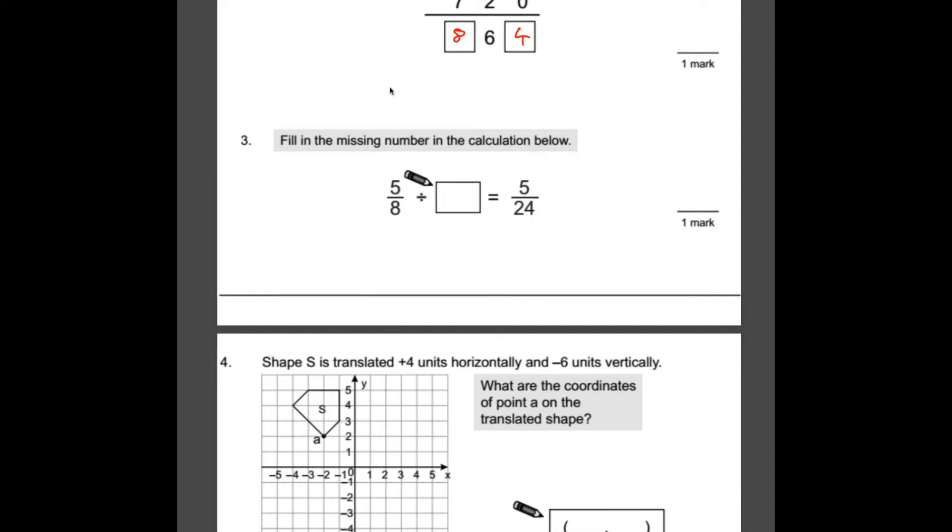Number three, fill in the missing number in the calculation below. If you have good knowledge of dividing fractions, you should be able to spot a pattern here. There is an 8 at the bottom here and there is a 24 at the bottom there. All you need to do to turn 8 into 24 would be to times 8 by 3. Seeing as we're working with fractions though, we need to divide by 3 because if we divide a fraction by a whole number, the denominator gets multiplied by that number.